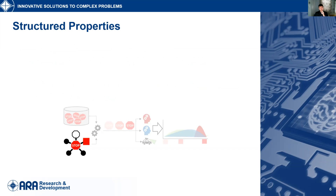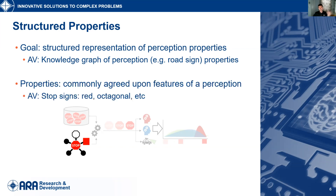What we do next is create a structured representation of these perceptions. What we use is a knowledge graph of these objects. This is just an overly simplified picture of a stop sign — you can see it's octagonal, it's the color red, and there are a bunch of other properties that are generally agreed upon. The idea is these properties are commonly agreed-upon features of a perception. For our AV examples, the stop sign is red, octagonal, and so on.